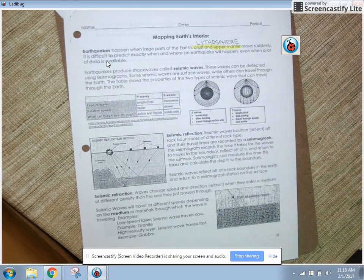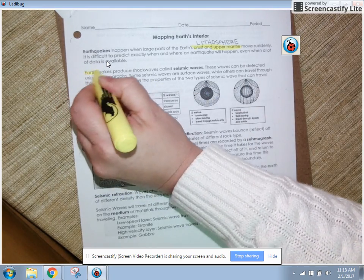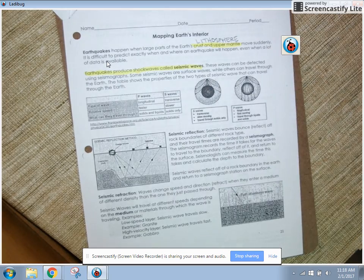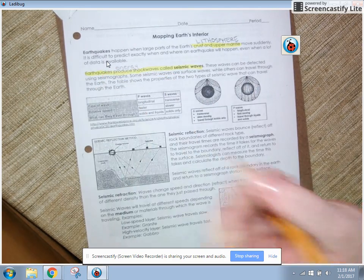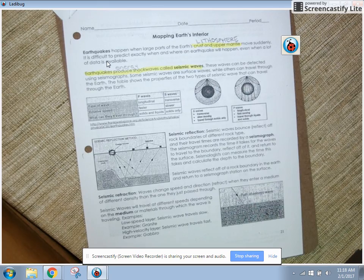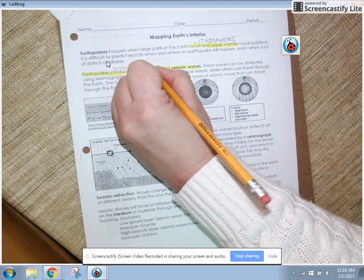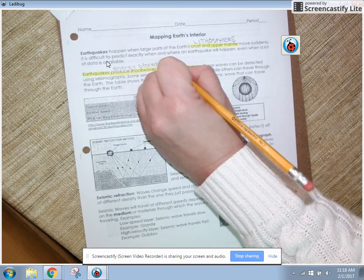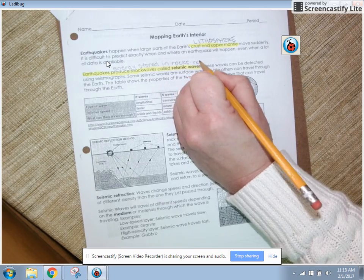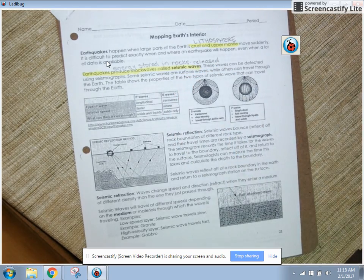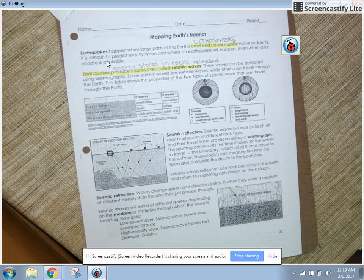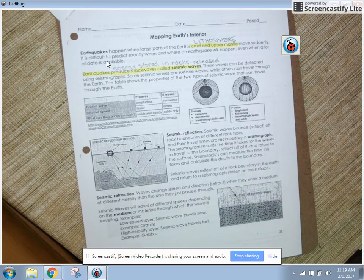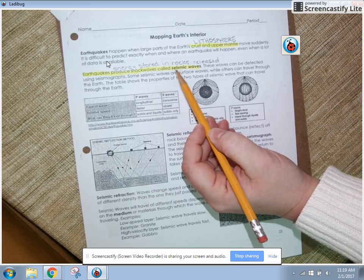So in the next paragraph, earthquakes produce shockwaves called seismic waves. I'm going to highlight that and I want you to highlight that also. I'd like to point out that basically what we're talking about is energy. And because of the law of conservation of energy, we know energy can't be created or destroyed. So where did this energy come from? This energy was stored in rocks and it was released. Energy can actually be stored inside of rocks when they're pressing together or trying to slip past one another or trying to move apart. When that motion actually occurs, that can release earthquakes, and that will release seismic waves.